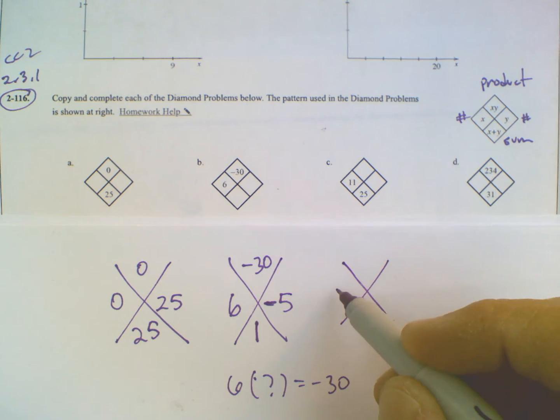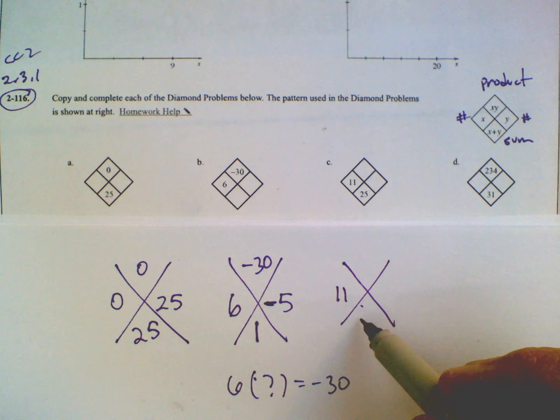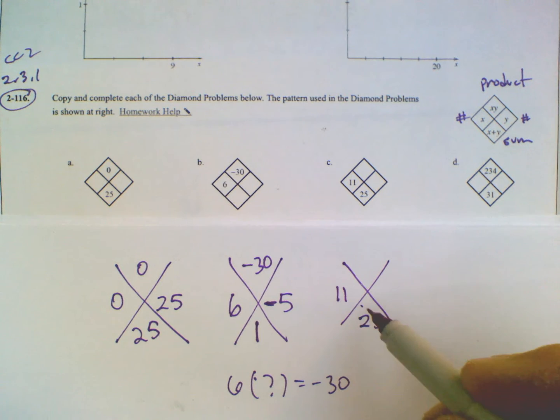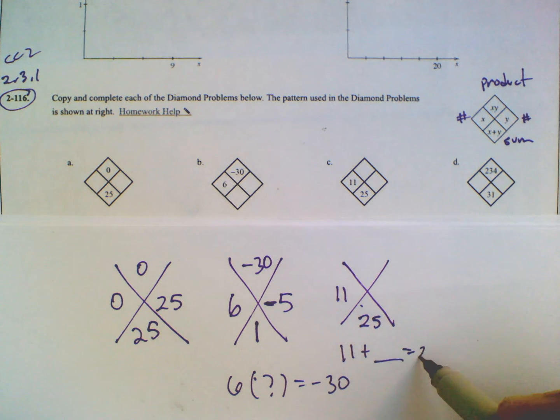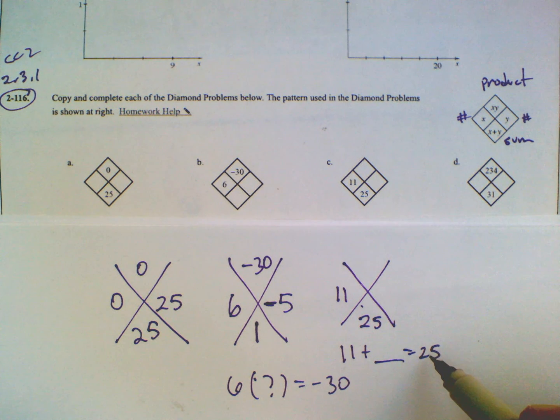C. We have 11. 11 is one of the numbers, and the sum is 25. So 11 plus something is equal to 25. Well, to figure that out, we just subtract 11 from 25 and we'll get 14.